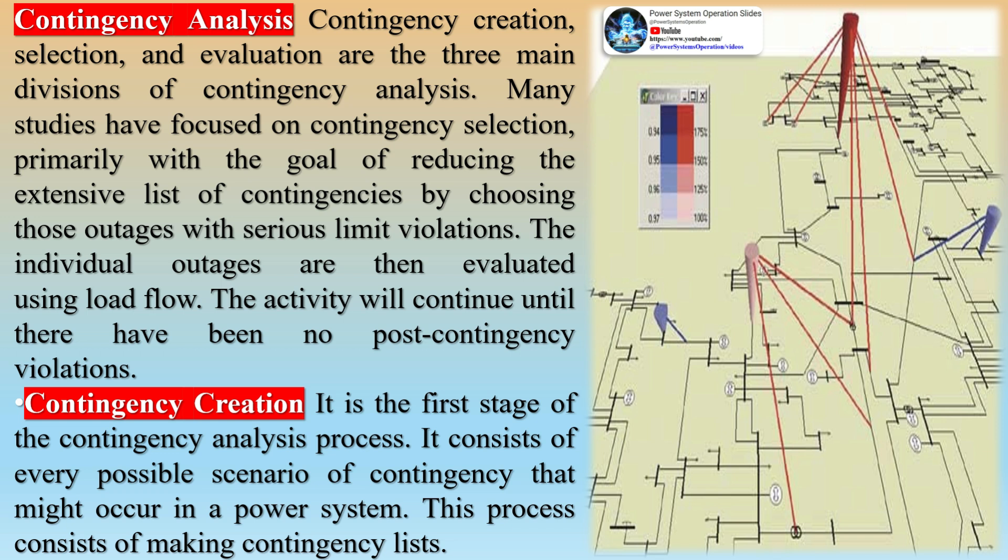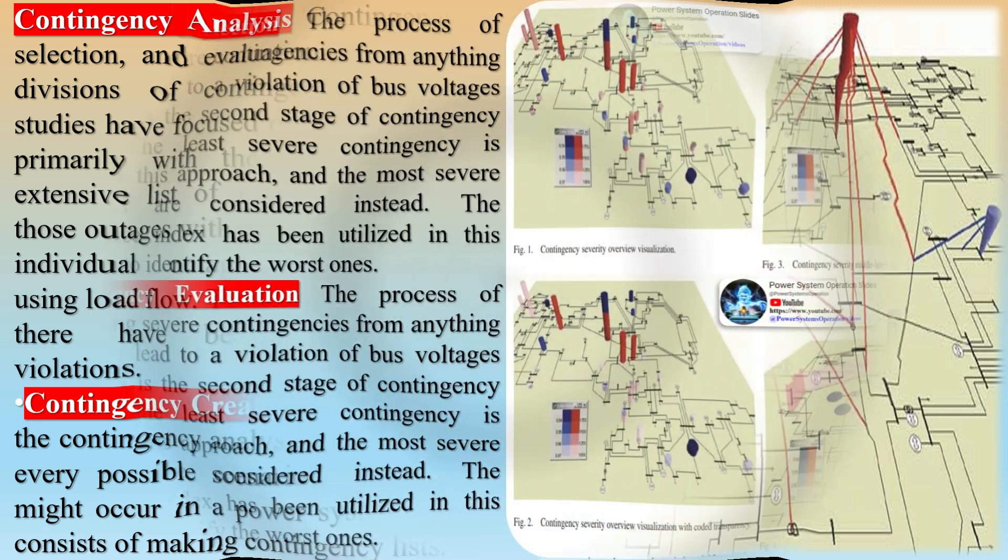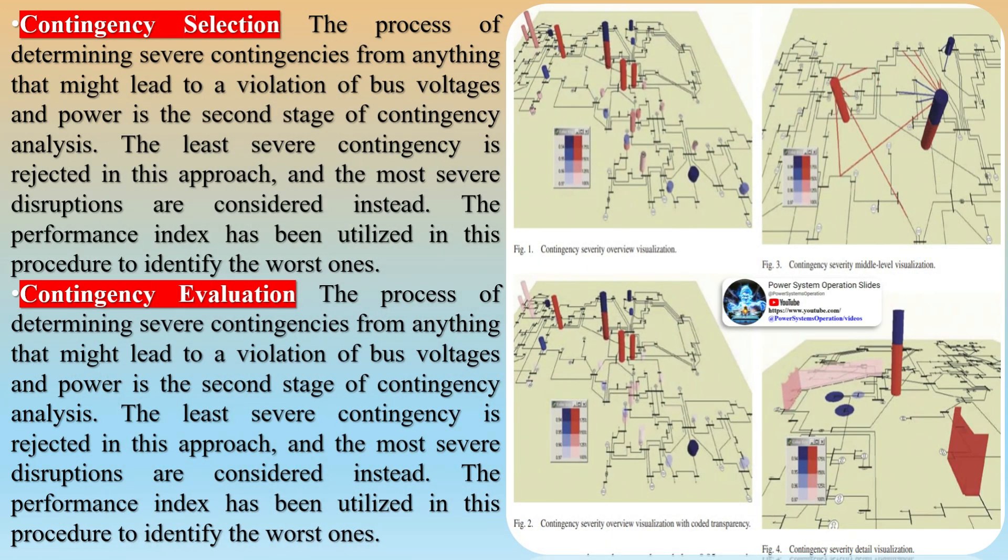Power system security involves system monitoring where real-time parameters are monitored using telemetry systems or SCADA systems. It then involves the most important function of contingency analysis, where simulation is carried out on a list of credible outage cases to give operators an indication of what might happen to the power system in an event of unscheduled equipment outage. This analysis forewarns the system operator and allows deciding on remedial action before the outage event.